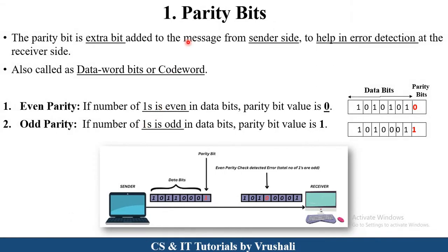The first error detection method is parity bits. Parity bits are divided into two types: even parity and odd parity. For example, suppose the sender sends a message like 1010101 to the receiver. A parity bit is added at the end of that message as an extra bit, which helps identify errors on the receiver side.